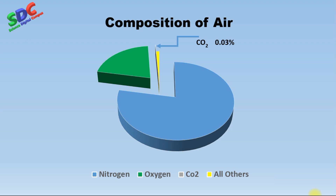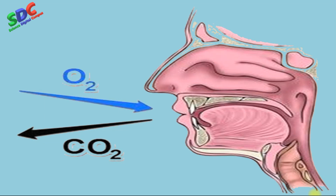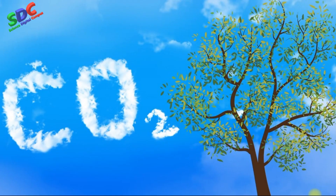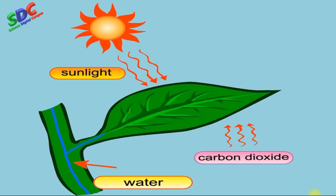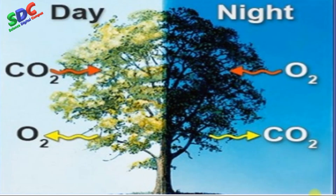The next constituent of air is carbon dioxide. About 0.03 percent of air is carbon dioxide. When we breathe out, we give out carbon dioxide. Carbon dioxide is important for all green plants — plants use carbon dioxide from the air, absorb water from the soil, and use sunlight to prepare their own food. This process is known as photosynthesis.